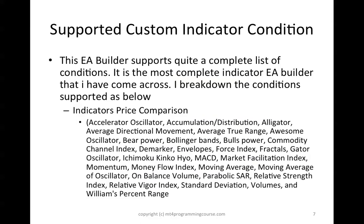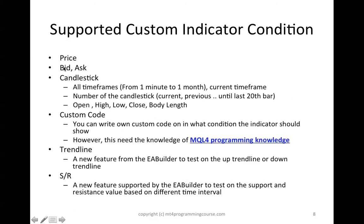So the supported conditions are quite comprehensive. Starting from the indicators that you are able to see in MT4, like for example, accelerator oscillators, accumulation or distribution, and so on. The whole list right here you can find the indicators that you want to build your own custom indicators. It also supports price — whether it's ask or bid. The candlestick price from all timeframes, from 1 minute to 1 month, or the current chart timeframe. The number of candlesticks that you can refer to, and the last previous 20th bar. And you can even compare on the open price, high price, low price, close price, and even the body length.